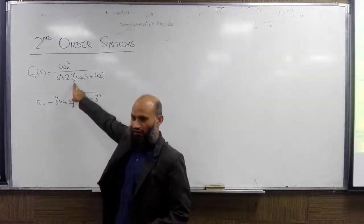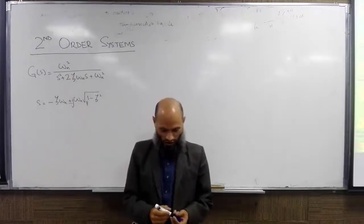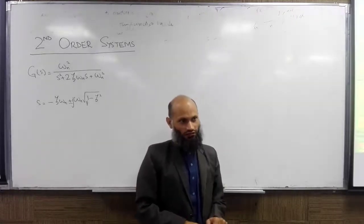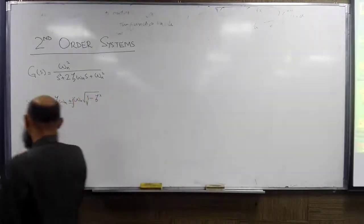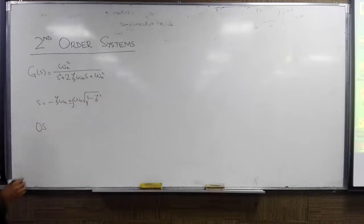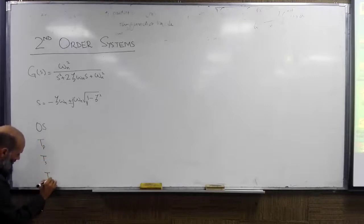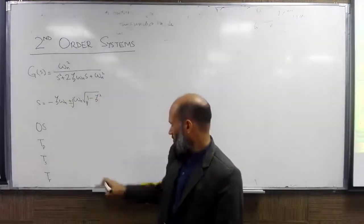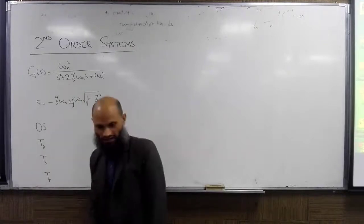We can also look at the value of zeta and see the qualitative behavior of the system. From the last lecture, the transient specifications for underdamped second order systems were provided in terms of overshoot, and the speed of the response was determined in terms of peak time, settling time, and rise time. In the last lecture, we derived expressions for all these specifications in terms of zeta and omega_n.